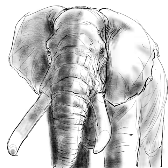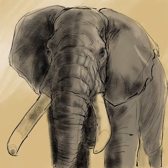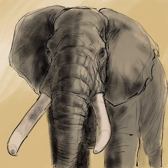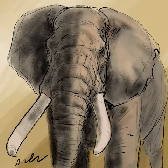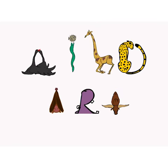Each elephant is right or left tusked, the same way we are right or left-handed. One tusk is almost always longer than the other.